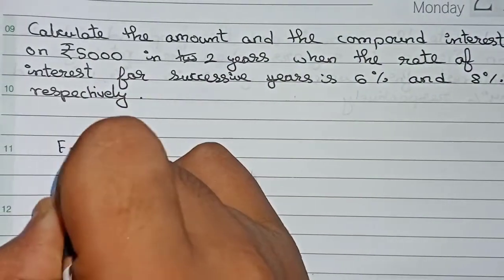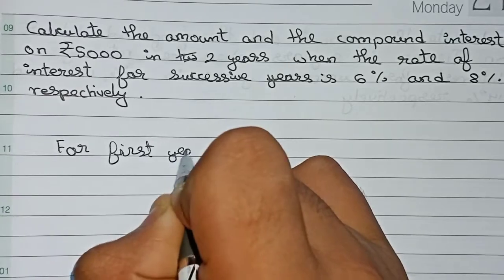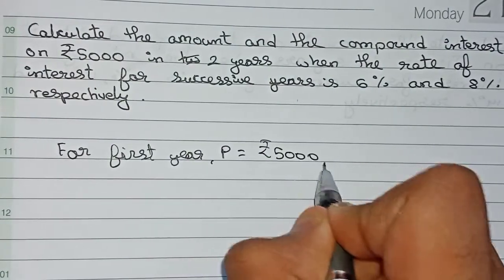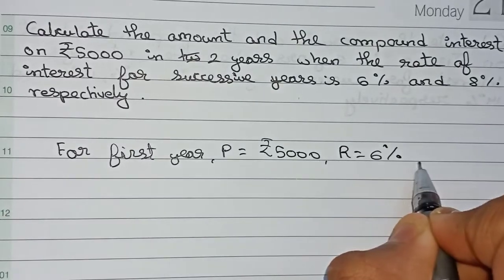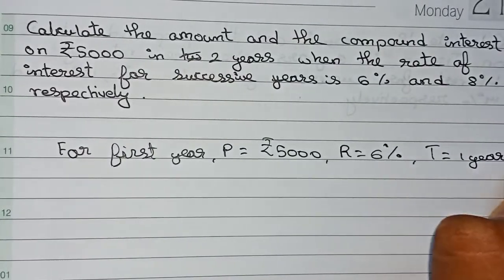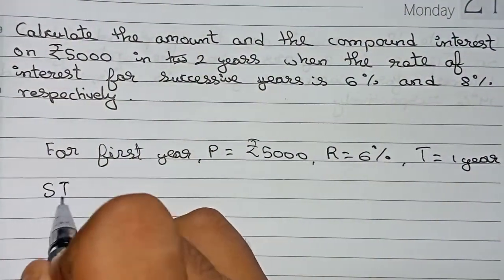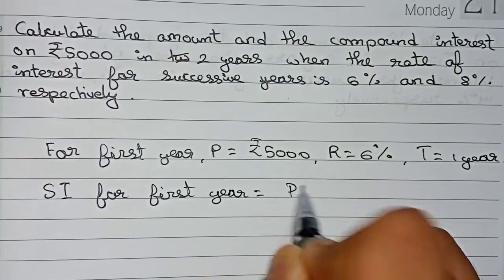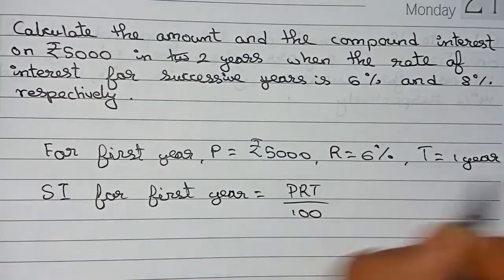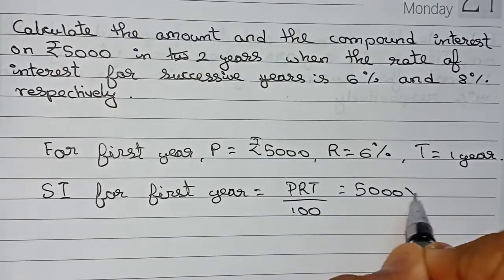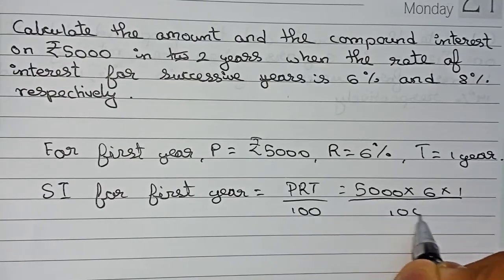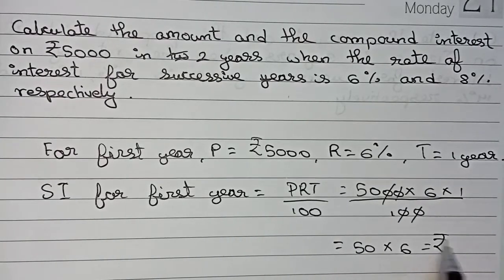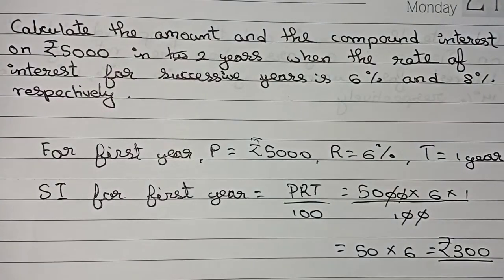For the first year: principal is equal to rupees 5000, rate is equal to six percent, and time is one year. Therefore, SI for the first year using the formula P×R×T divided by 100 equals 5000 into 6 into 1 by 100. Cutting the zeros, we get 50 into 6, which equals rupees 300. So this is the interest for the first year.